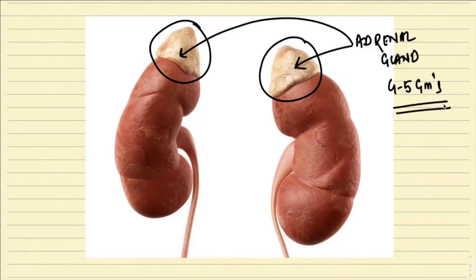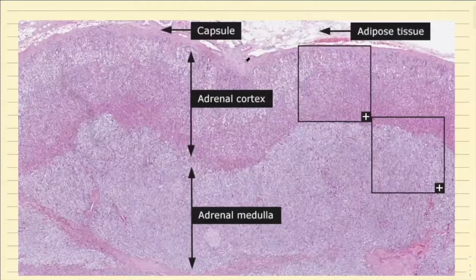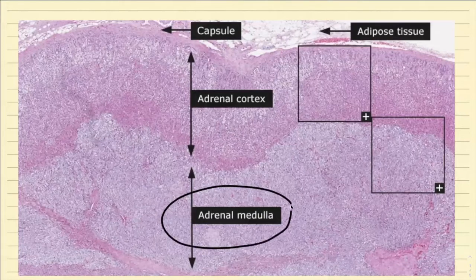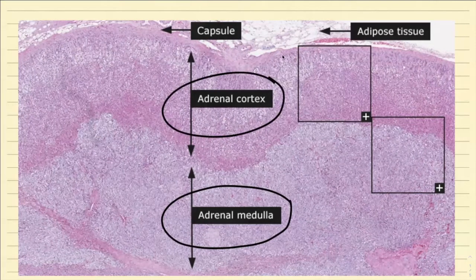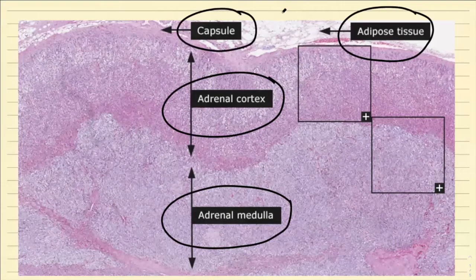Going into the microscopic examination of the adrenal glands, as you can appreciate from this diagram, the adrenals have two important parts. On the inside, they have what is called the adrenal medulla, and on the outer aspect, they have the adrenal cortex. Surrounding the adrenal gland on the outer aspect we have adipose tissue, and just between the adipose tissue and the cortex we also have a capsule.